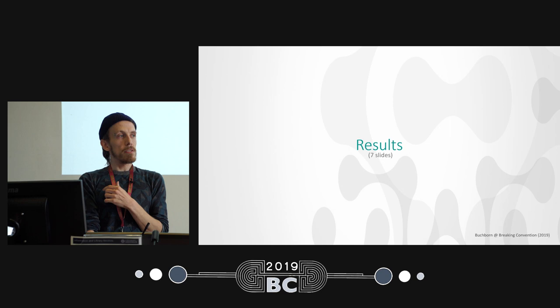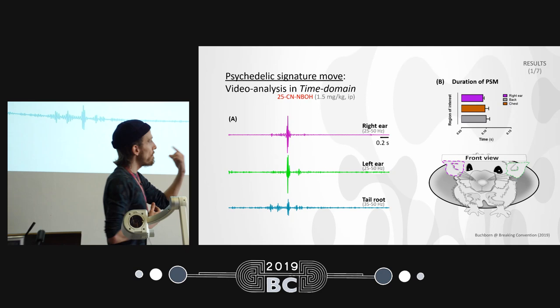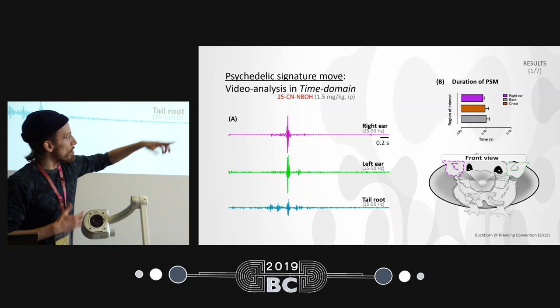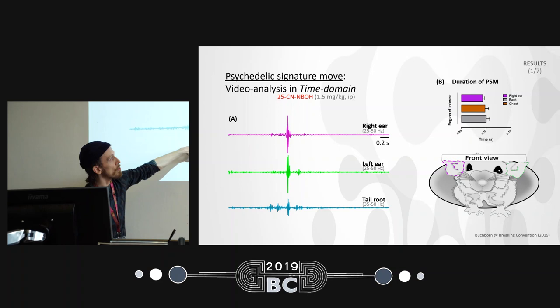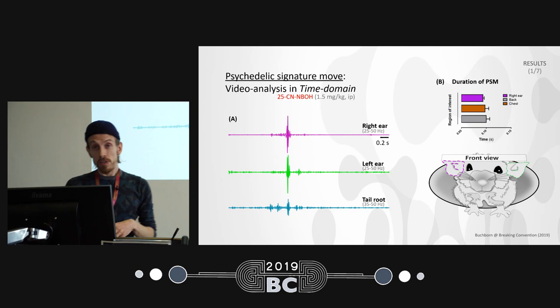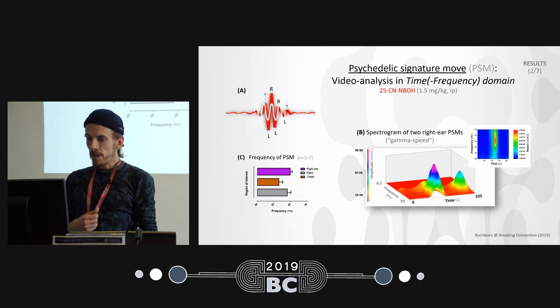In the results: from the videotaped mouse we have a frontal perspective, defining regions of interest around the ears and chest, and a tail perspective. We can measure when animals twitch — right ear, left ear, tail, chest, and back. What we learn is that the twitch is very brief, lasting only around 100 milliseconds. It's important to characterize the behavior before going into the brain.